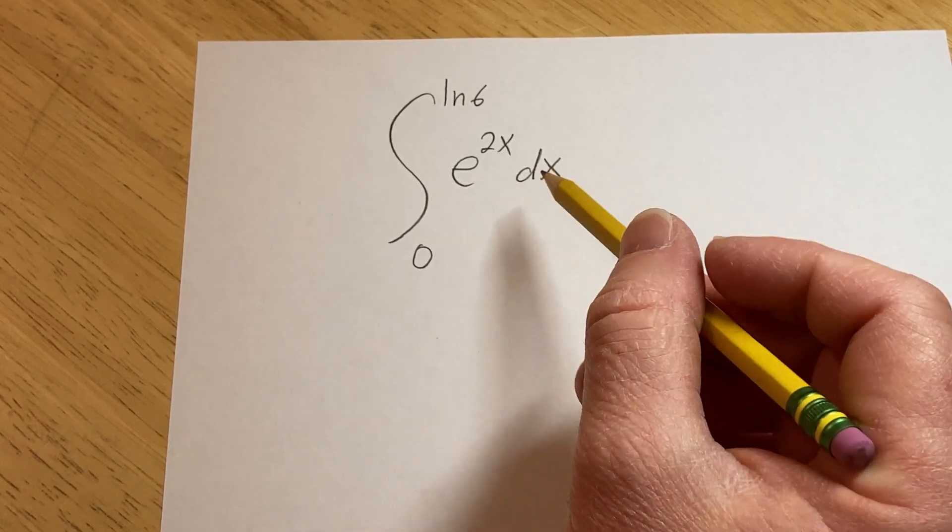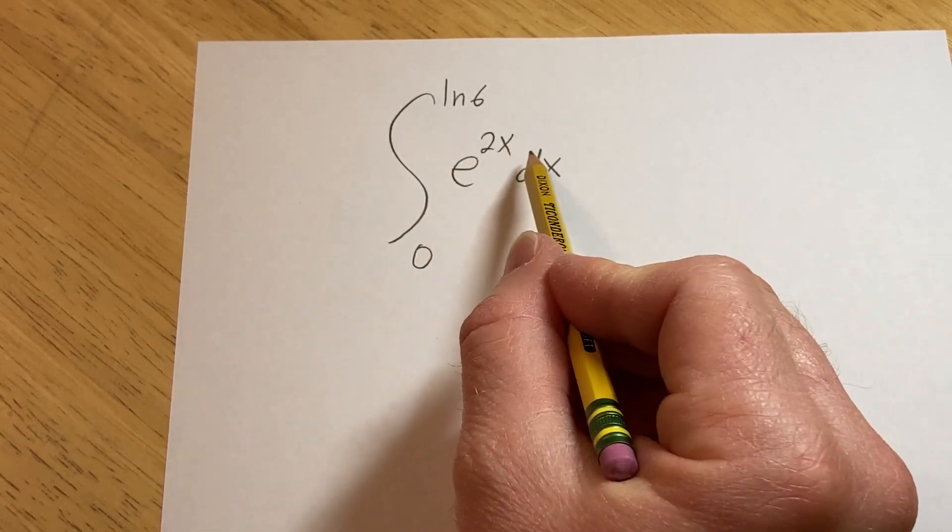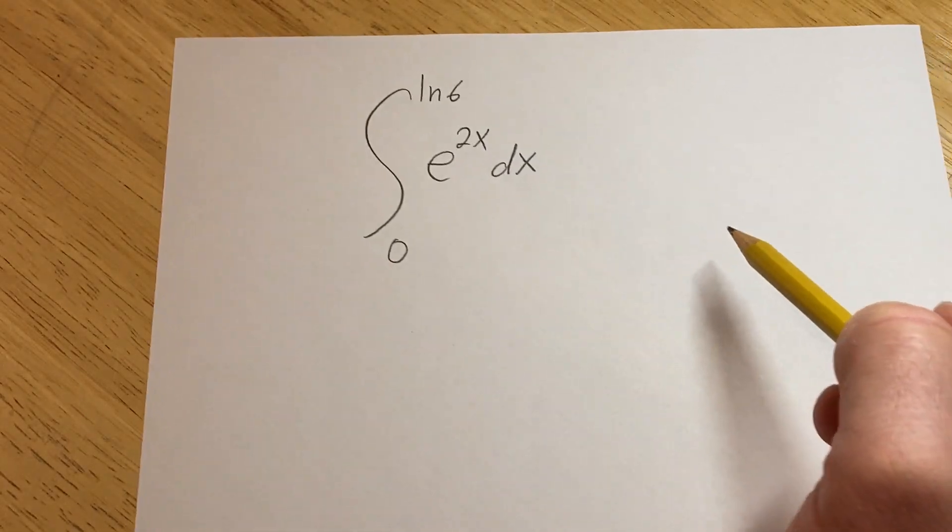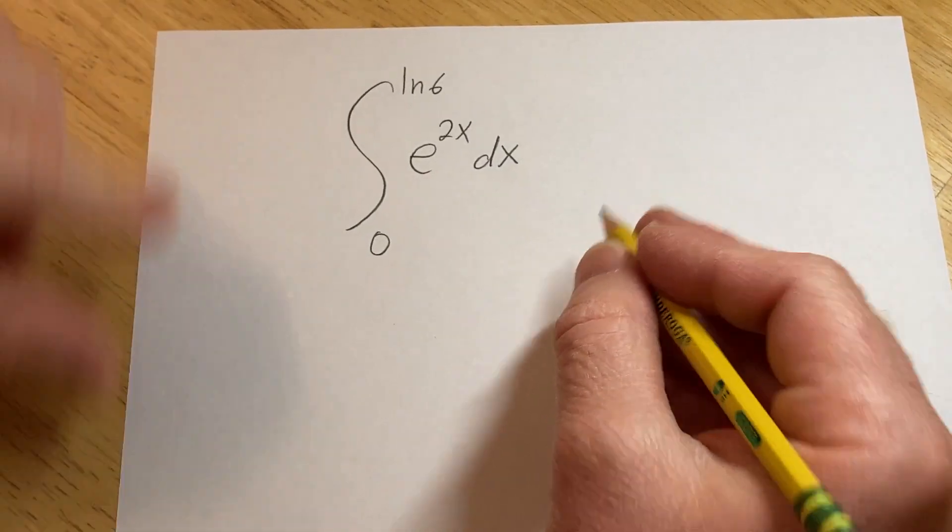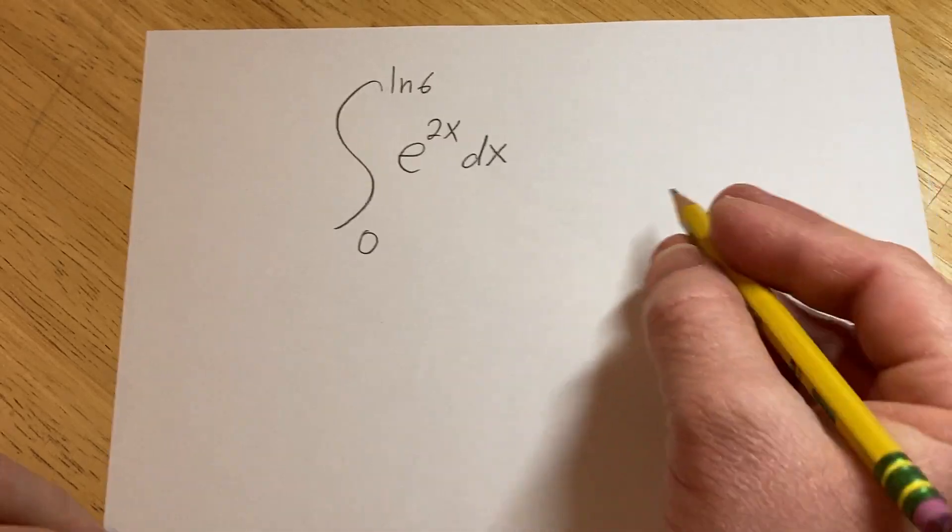So there's a couple ways to do this. You can make a u substitution, or you can use a formula which is sometimes presented in certain books. I'm going to show you the formula which you sometimes find in textbooks.